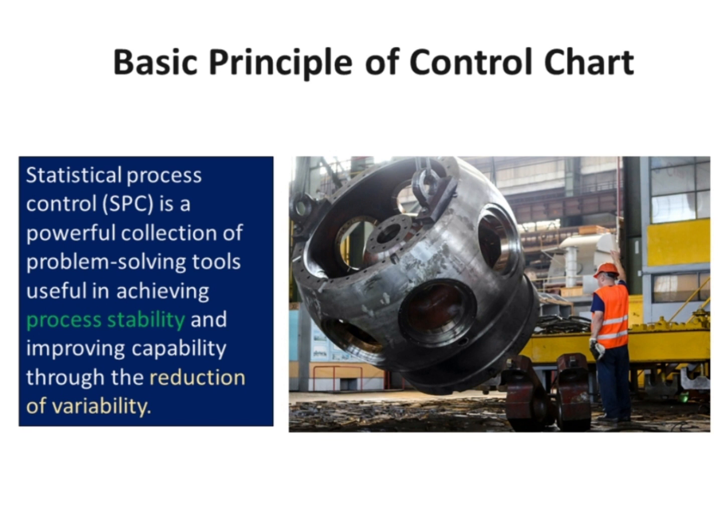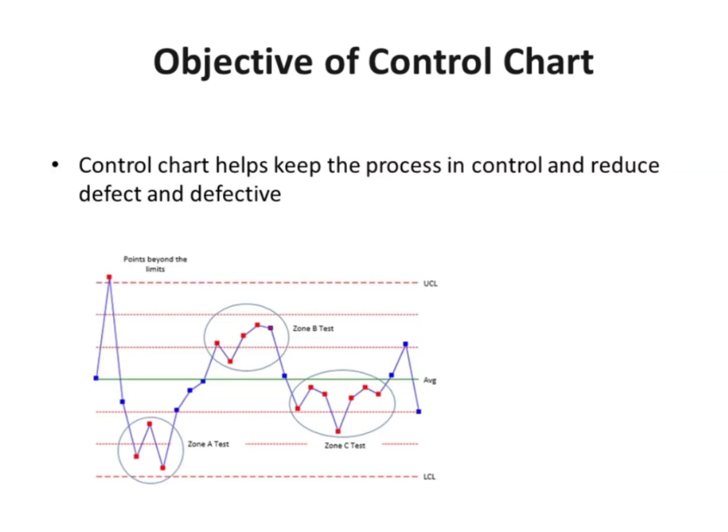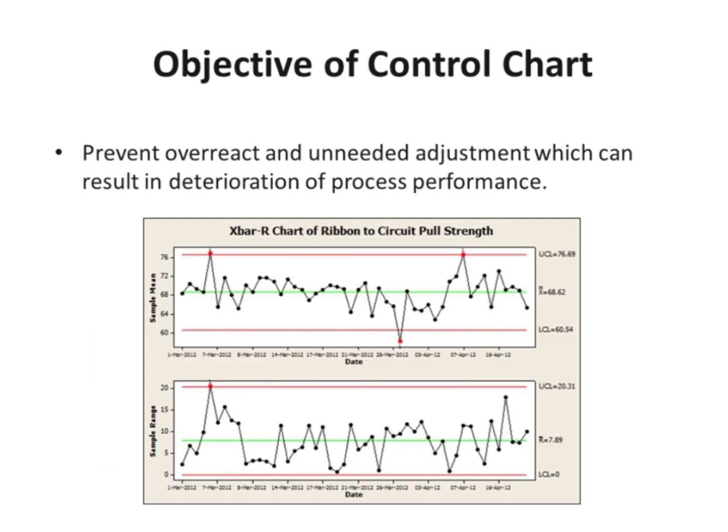Statistical Process Control, SPC, is a powerful collection of problem-solving tools useful in achieving process stability and improving capability through the reduction of variability. The objective of the control chart is to help keep the process in control and reduce defects and defectives. Besides, control charts help prevent overreaction and unneeded adjustment, which can result in deterioration of process performance.